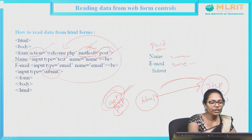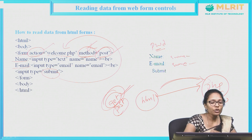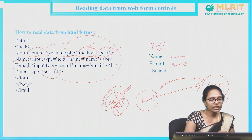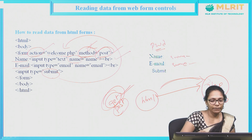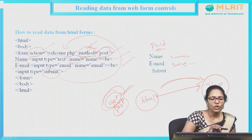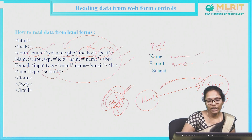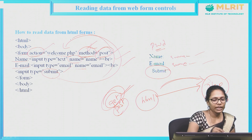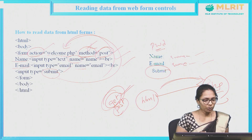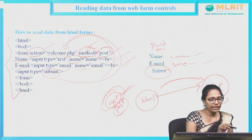Now I am creating two different fields: name and email. To create the name field, I am writing input type equal to text and I should also give a name attribute for each and every tag in the HTML form. The name for the first field is 'name' and the name for the second field is 'email', followed by a submit button. After filling name and email, if I click on submit, this page will be redirected to welcome.php.